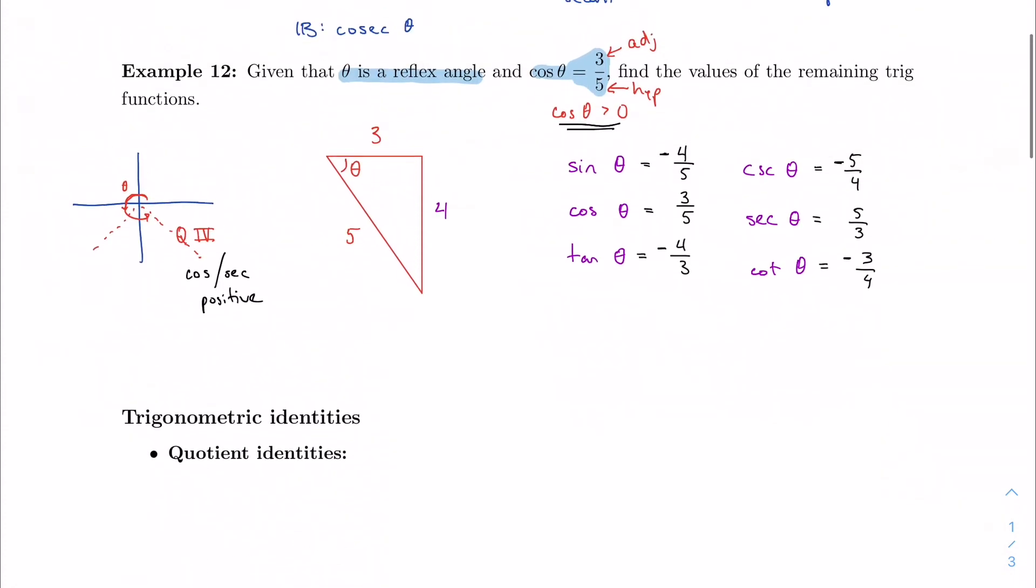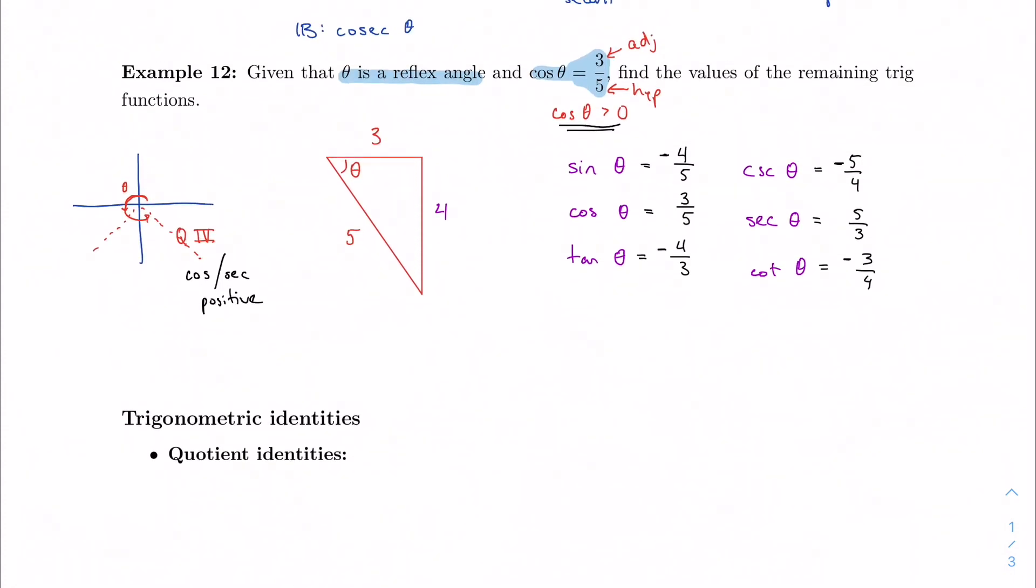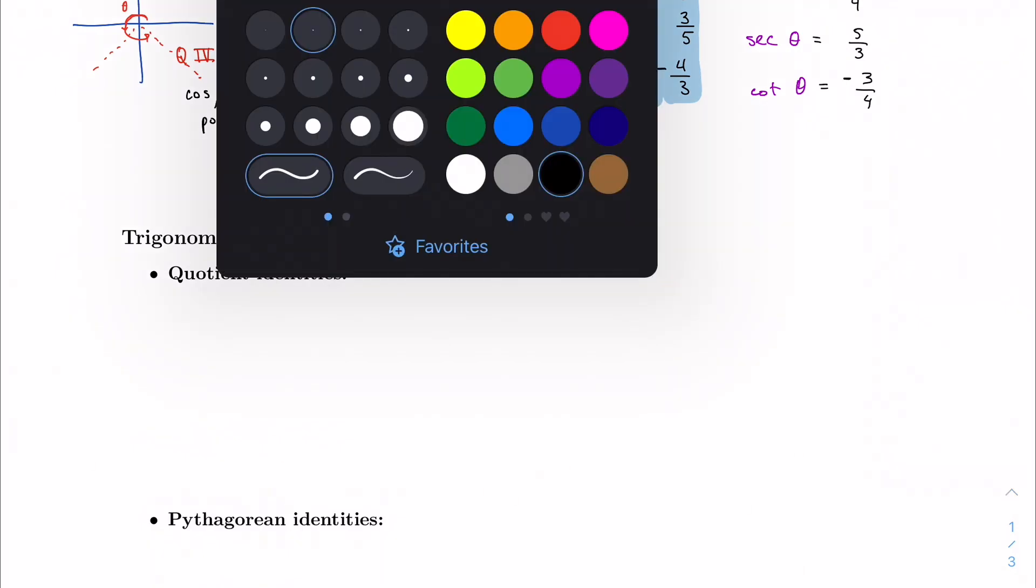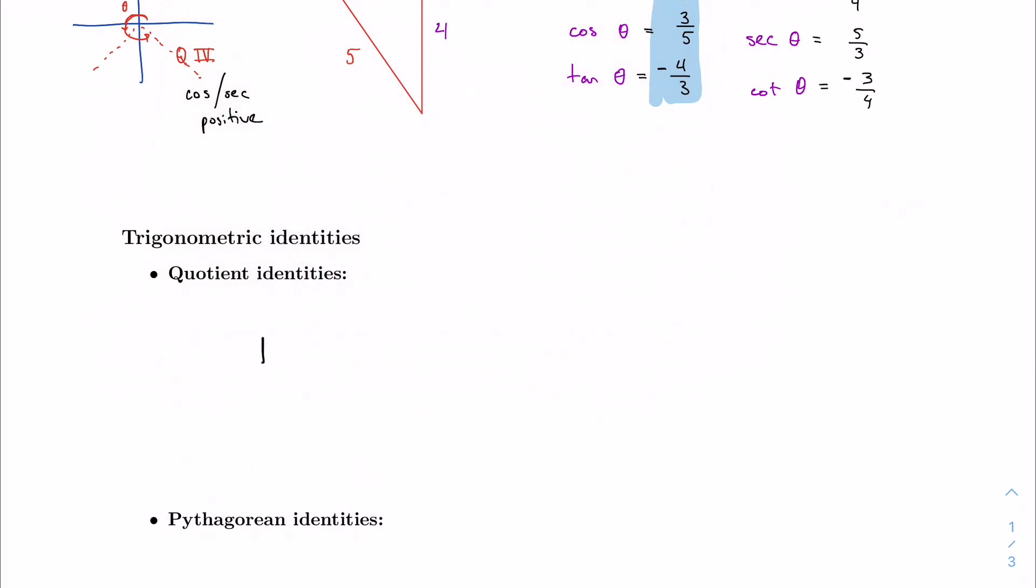Let's take a look at some more identities here. So our quotient identities. Well, we've started to play around with these a little bit. We've talked about one over sine is reciprocal. We might have seen this a little bit in the last problem. Maybe you've noticed a connection between these three values a little bit. Well, these two quotient identities go like this.